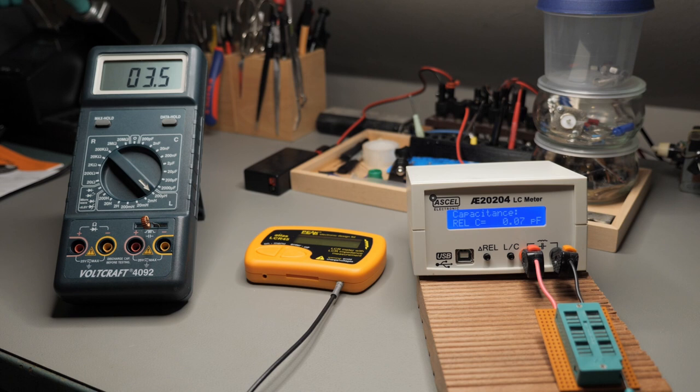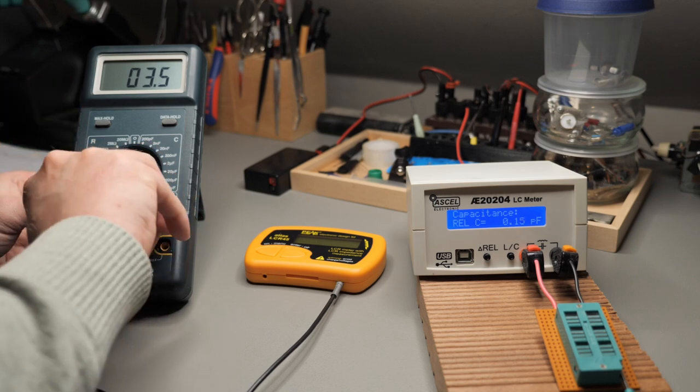Let me try to get the first inductor inserted. So this is the self-wound toroid on a T30-2 core. And it shows us, let me write it down for later, it shows us something between 3.4 and 3.5 microhenry. So let me write down 3.45 shall I?